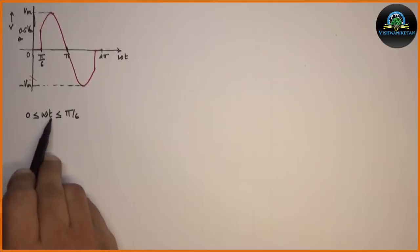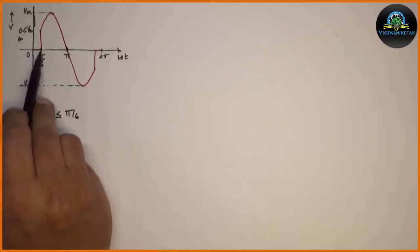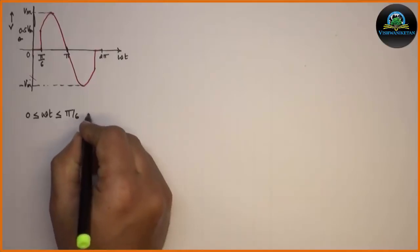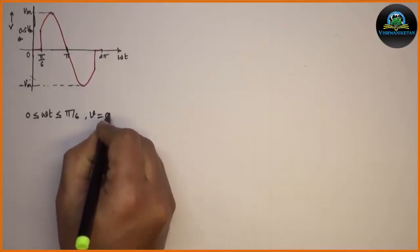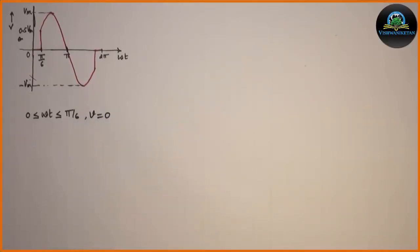Hence omega t varies from 0 to pi by 6. The voltage is 0. Hence we can write down the equation as V is equal to 0.